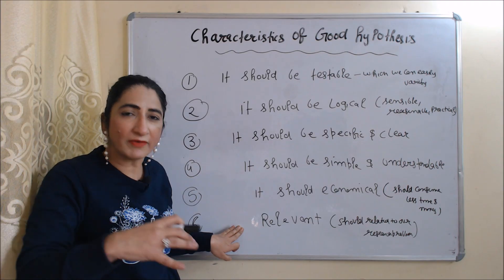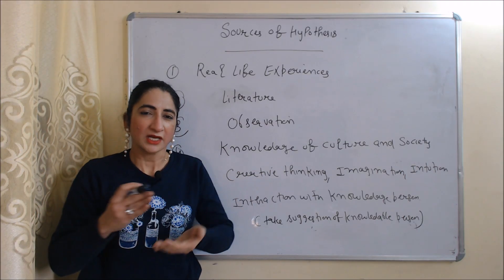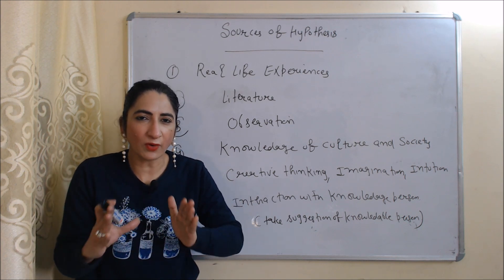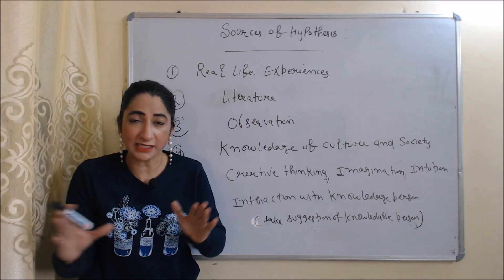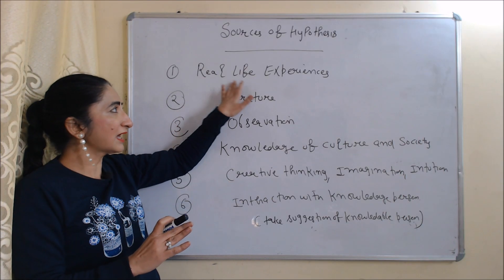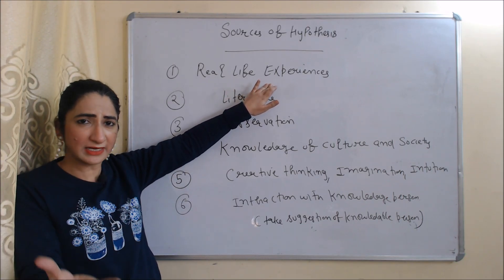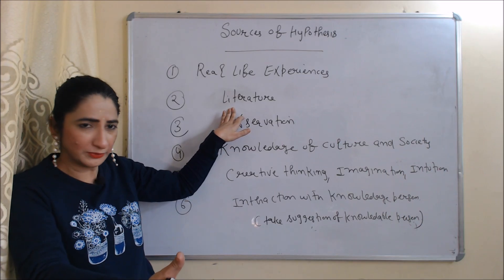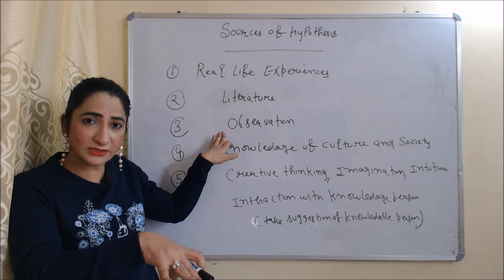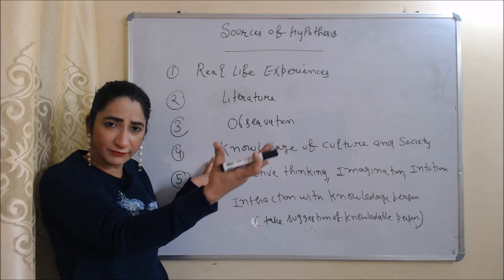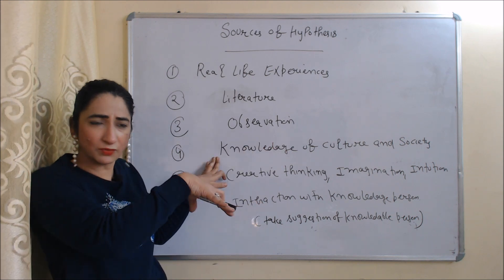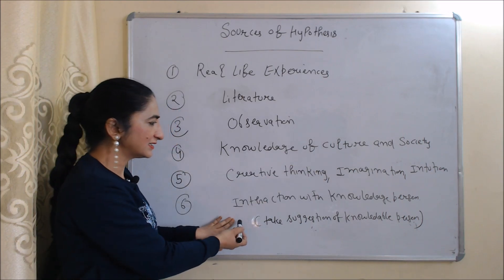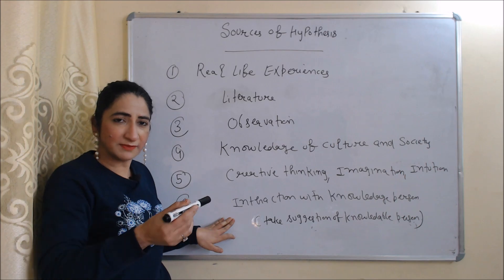Now we'll see sources of hypothesis — meaning from where you can find your hypothesis. One source is real-life experiences; you can formulate a hypothesis based on your real-life experiences. Next is literature — you can take help from books or newspaper articles. Next is observation. Another source is knowledge of cultural society — you can formulate a hypothesis based on your knowledge of the culture and society you belong to. You can also use creative thinking, imagination, and intuition. Last is interaction with a knowledgeable person — you can formulate a hypothesis by taking suggestions from an expert.